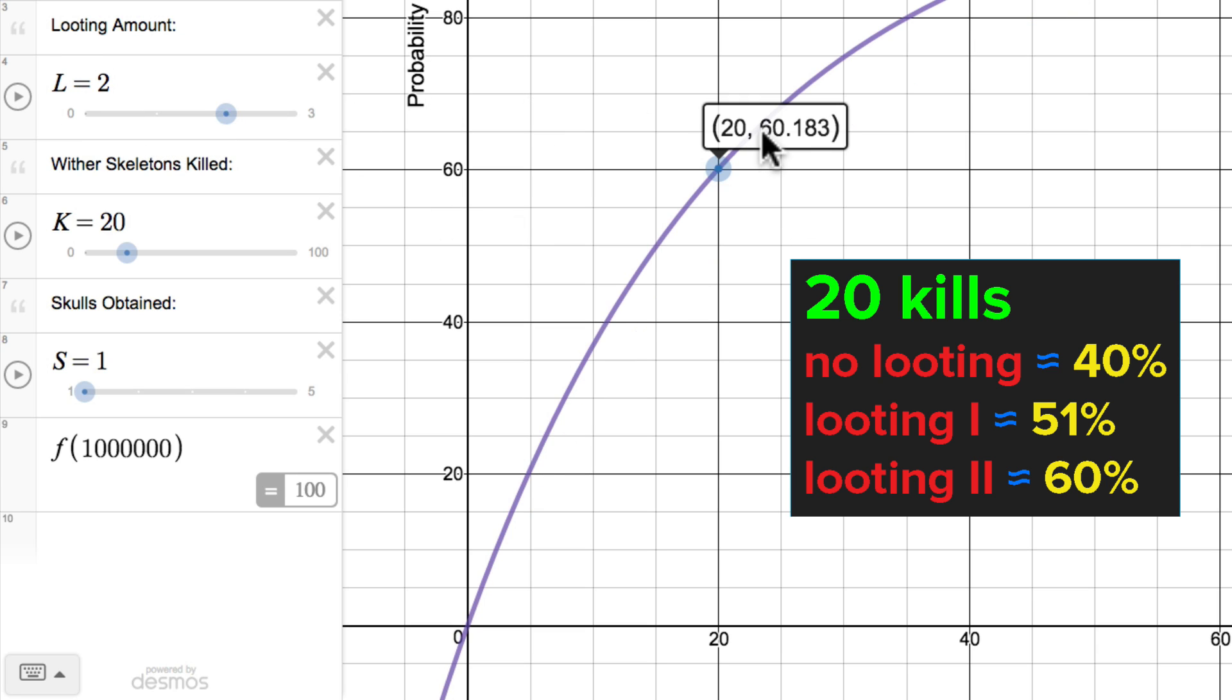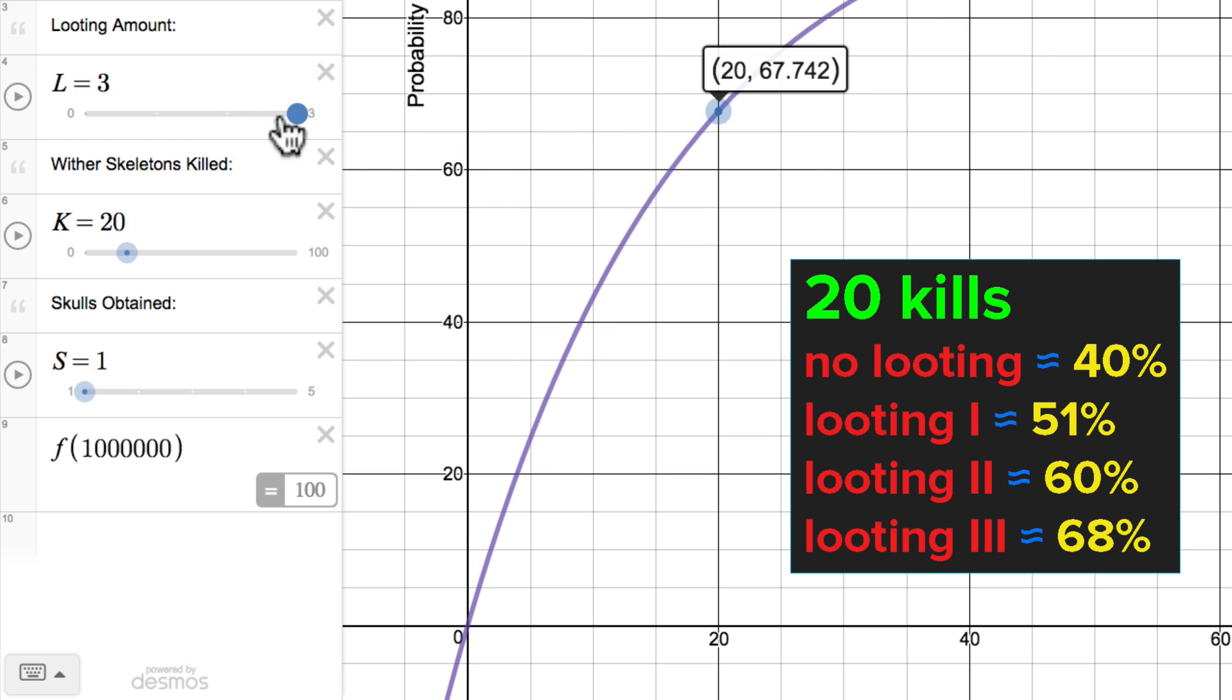If we have looting 2, there is about a 60% chance we will have a skull by then. And looting 3, about 68%.